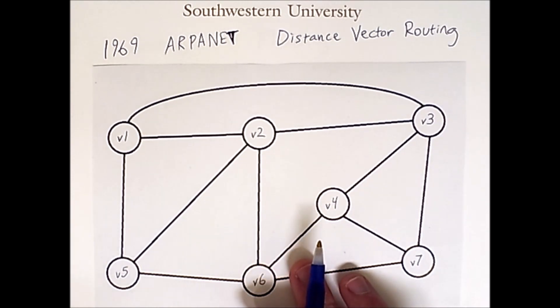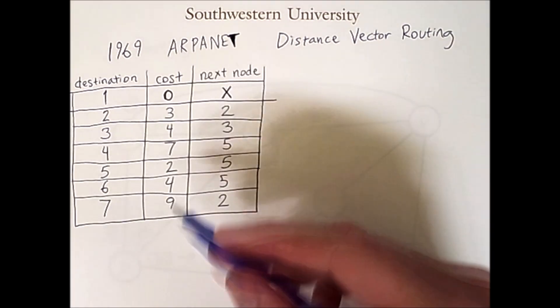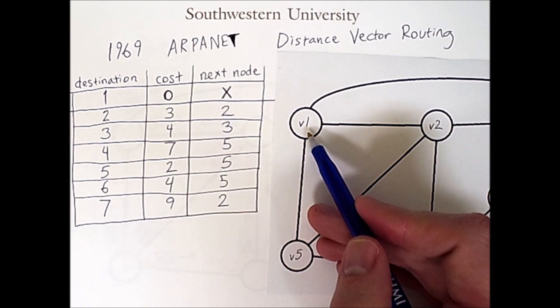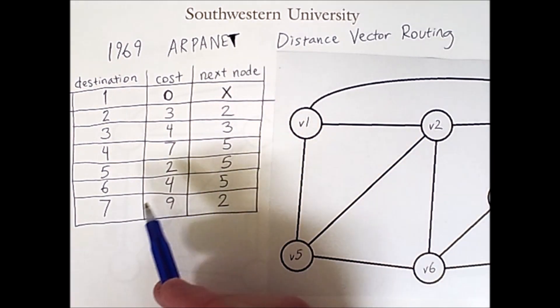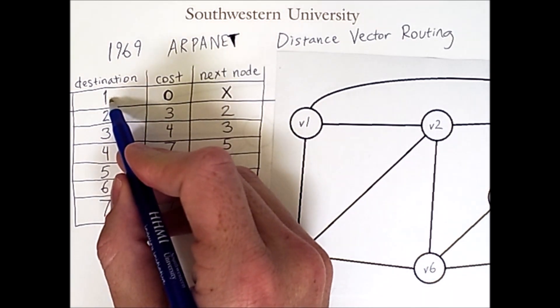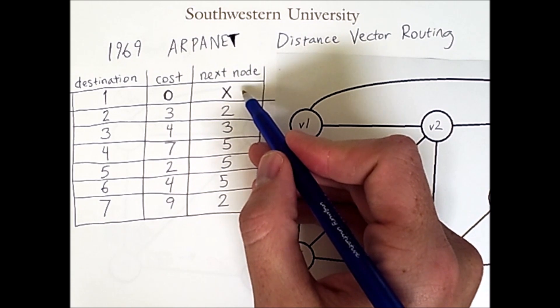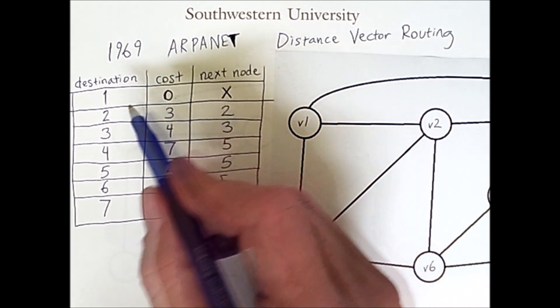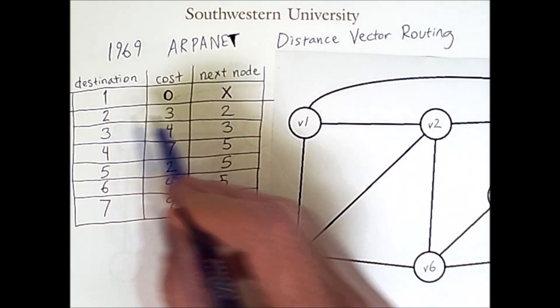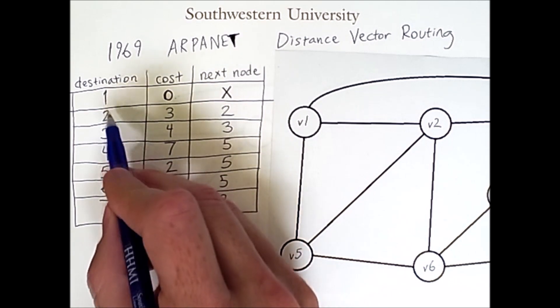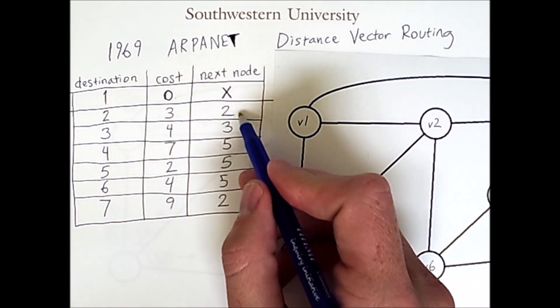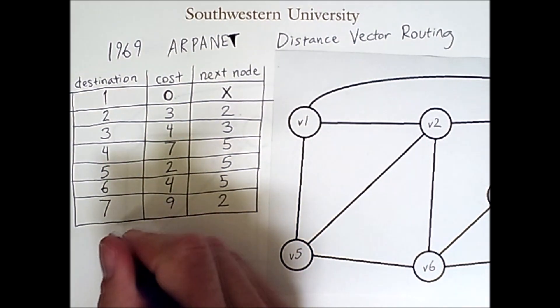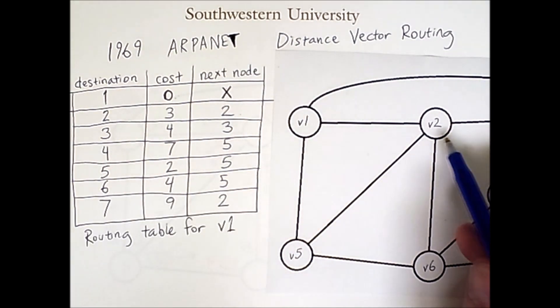So what information does node 1 need? It needs a routing table. So a routing table looks something like this. This routing table tells node 1 all that it needs to know to send a packet to any other node in this network. For example, if the final destination of a packet is node 1, then there is no next node because the packet is already at its final destination. The cost to reach this destination is 0. Remember that this table belongs exclusively to node 1. Each node in the network has its own table.